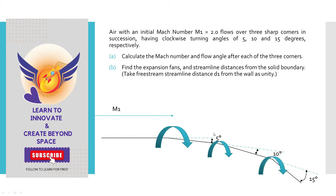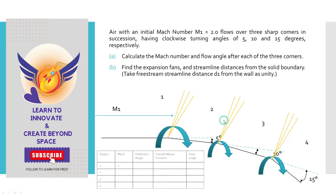A turning angle of 5 degrees deflecting downwards leads to an expansion shock wave, creating zones 1 and 2. Moving to the second zone with another deflection of 10 degrees creates another expansion shock wave separating zone 3, and a further deflection of 15 degrees forms another expansion shock wave. Given data: M1 is given, all deflection angles are provided. We need to find Mach numbers M2, M3, M4, Prandtl-Mayer functions, and the flow angle for each case.